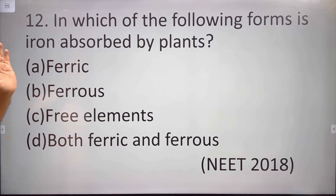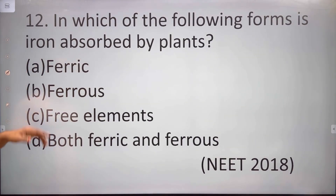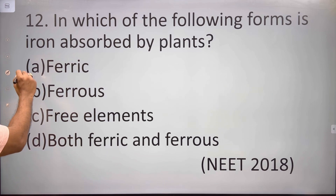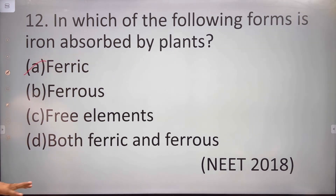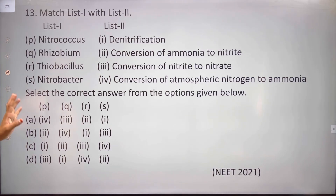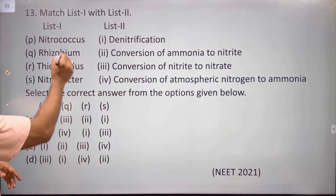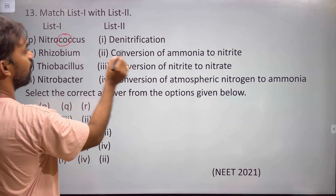In which of the following forms is iron absorbed by plants? Iron is absorbed in the ferric form. Plants also take up nitrogen as ammonia.